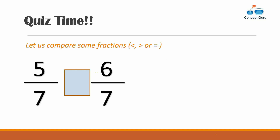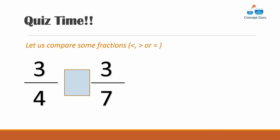Let's check our understanding. Is five by seven greater than six by seven? They have the same denominator, so we compare numerators — five is less than six, so five by seven is less than six by seven. Now compare three by four and three by seven. They have the same numerator but different denominators — three by four is greater than three by seven.